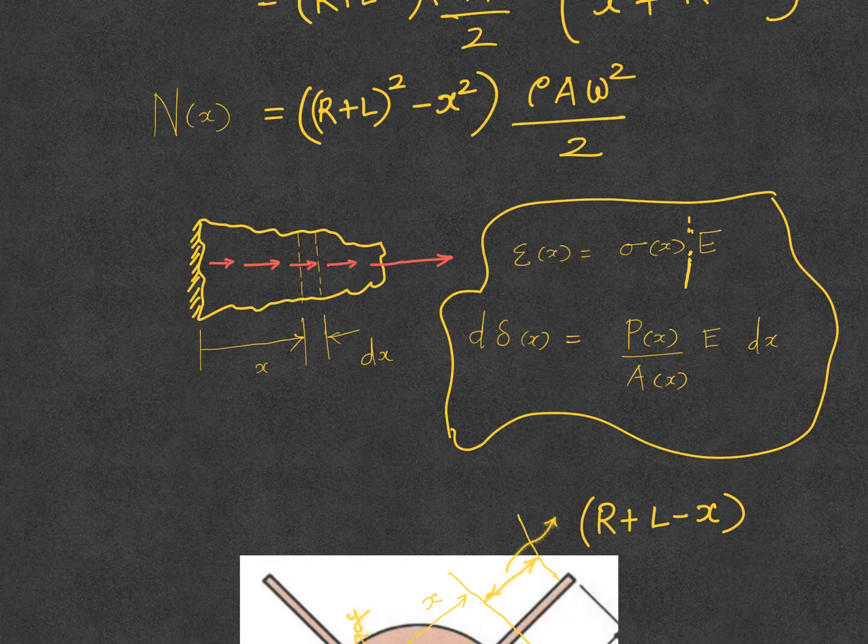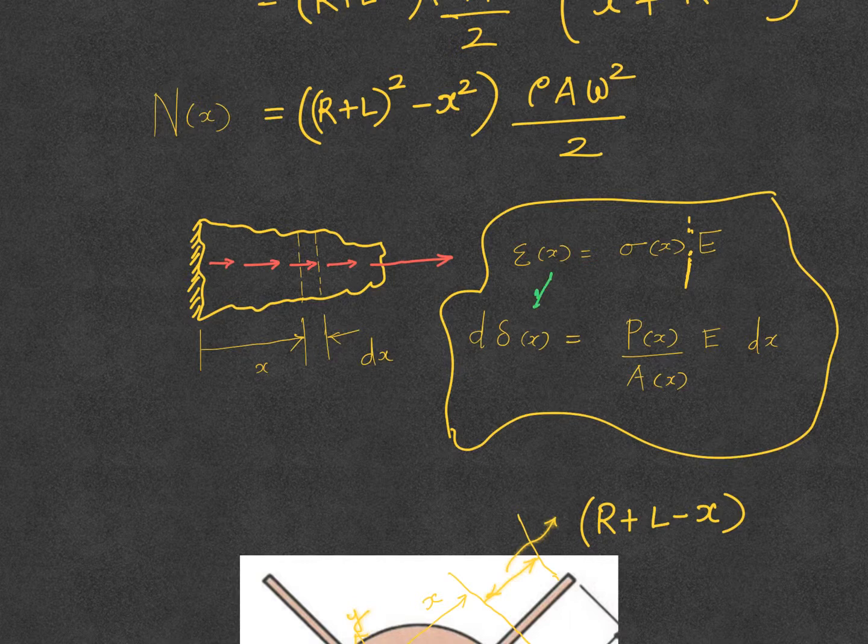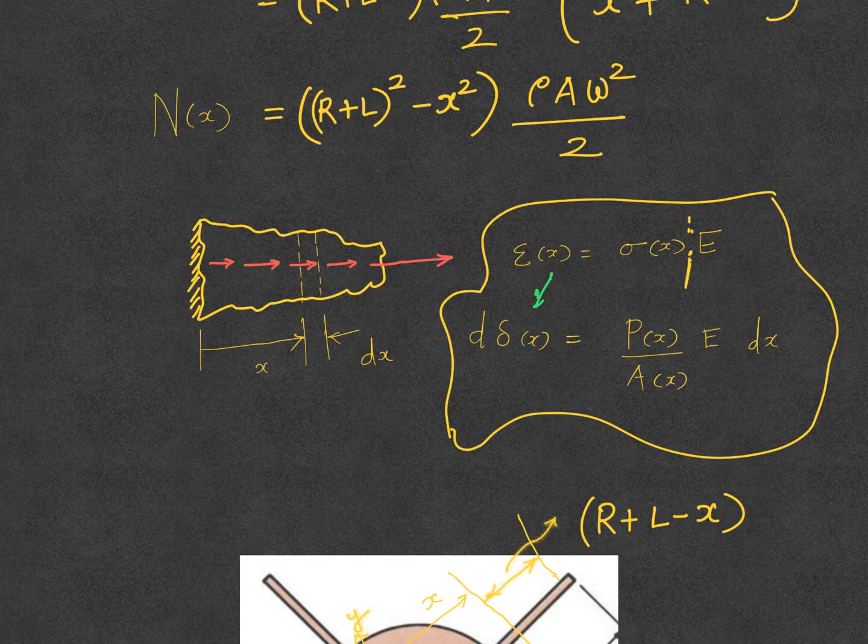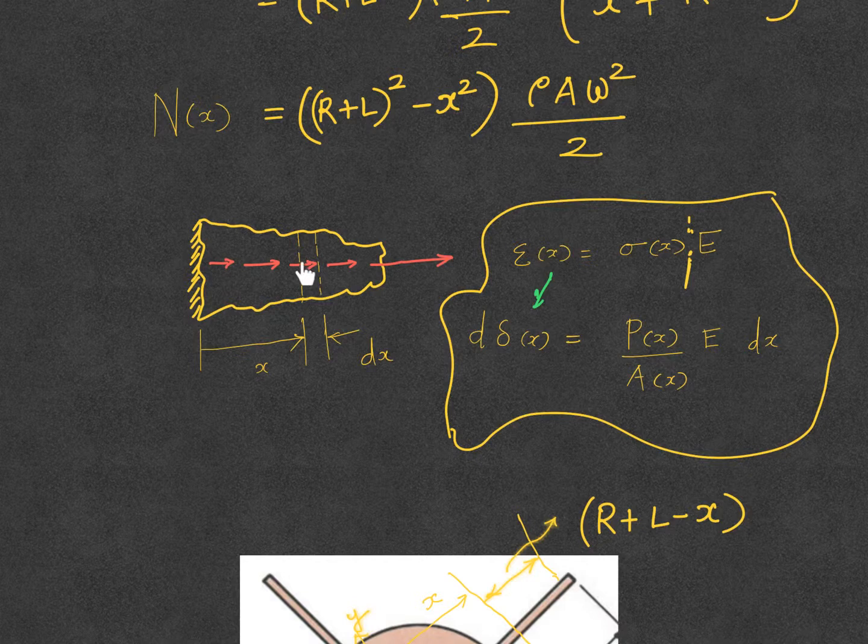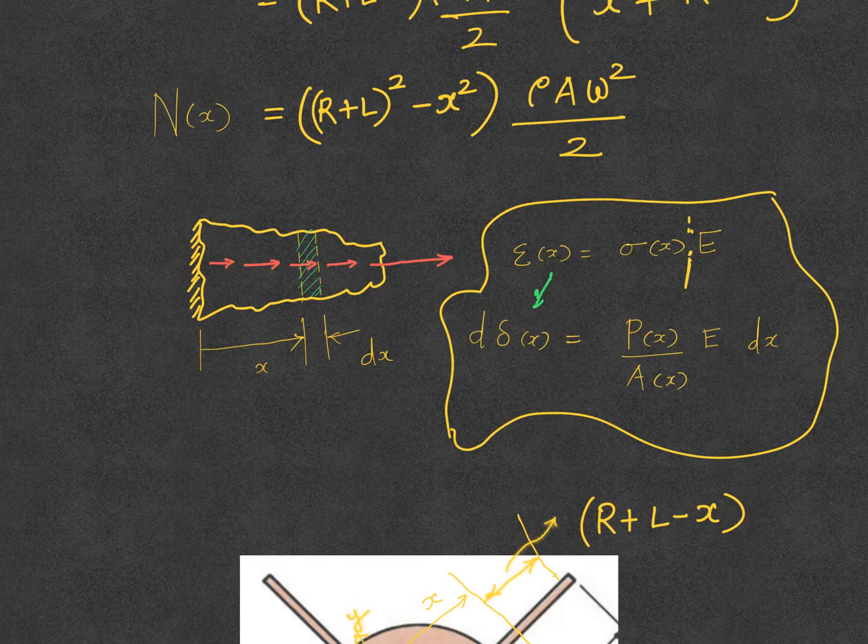ε(x) equals σ(x) divided by E, where E is the Young's modulus. If I slightly manipulate that expression, ε(x) I can substitute as dδ/dx, where dδ(x) means the small amount of deflection coming from this strip of material.